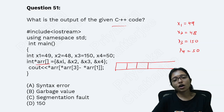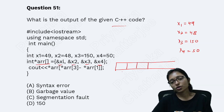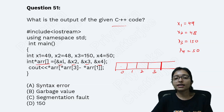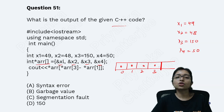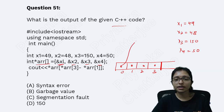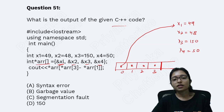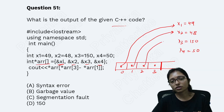In this array there are 4 locations: indices 0, 1, 2, 3. Each location is holding the address of another variable. Index 0 holds the address of X1, index 1 holds the address of X2, index 2 holds the address of X3, and index 3 holds the address of X4.